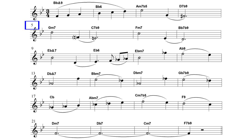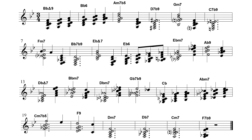Also note the measure numbers at the start of each line. In longer pieces, this lets the band leader identify specific places in the music — for example, let's go back to bar 57 and try that again. This score shows all five saxophone parts on one staff in the same key, which is how the arrangement was created. Once satisfied with the harmonies, I split each part to a separate staff, then transposed the notes to match the native key of the saxophone type.